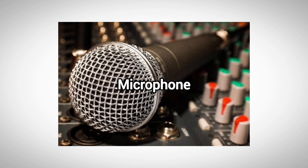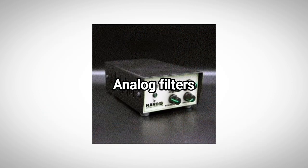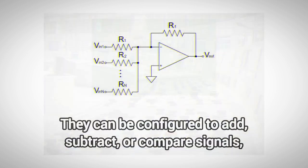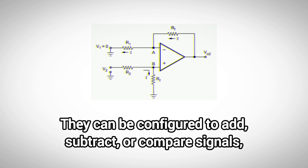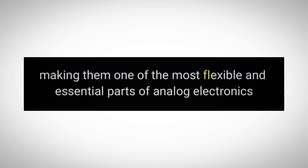Op-amps are used in microphones, audio equipment, analog filters, and control systems. They can be configured to add, subtract, or compare signals, making them one of the most flexible and essential parts of analog electronics.